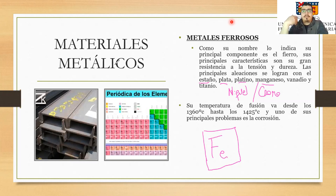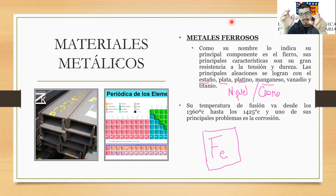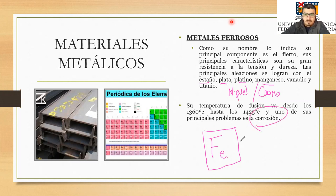La importancia de estos elementos es que mejoran las propiedades, como el rango de temperatura de fusión de los metales ferrosos, que está entre los 1360 y 1425 grados Celsius. Uno de los principales problemas de los ferrosos es la corrosión, porque el ánodo de fierro es uno de los primeros que se va cuando existe corrosión.